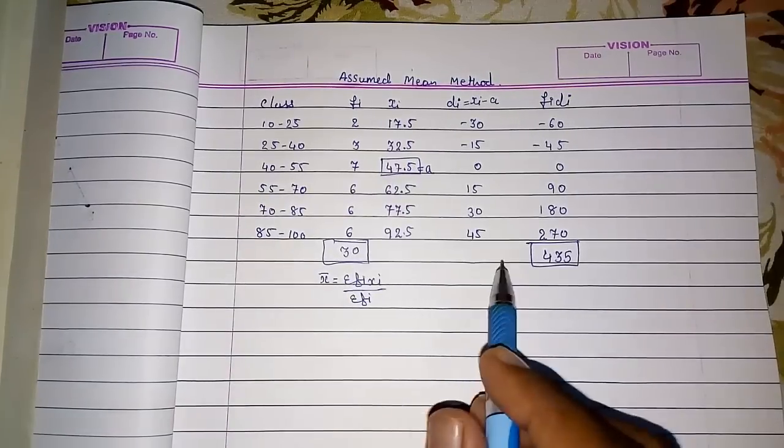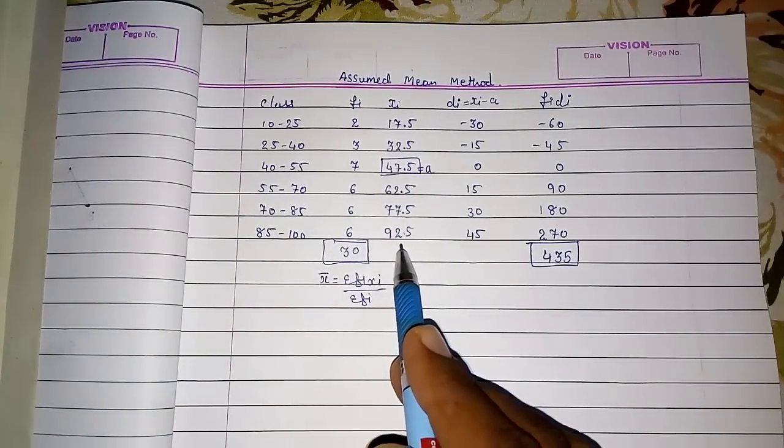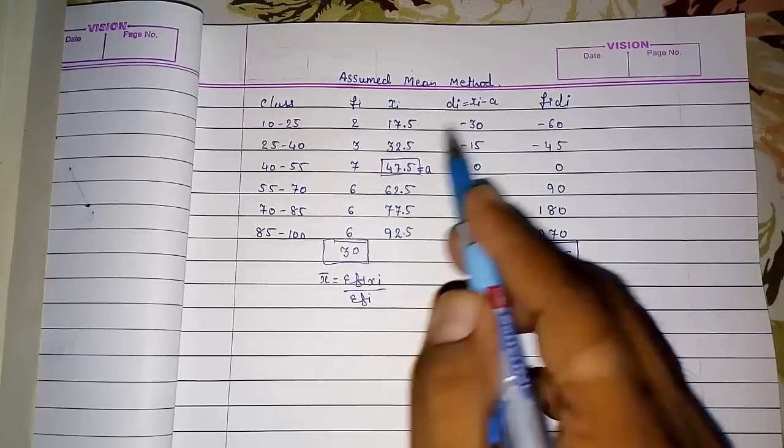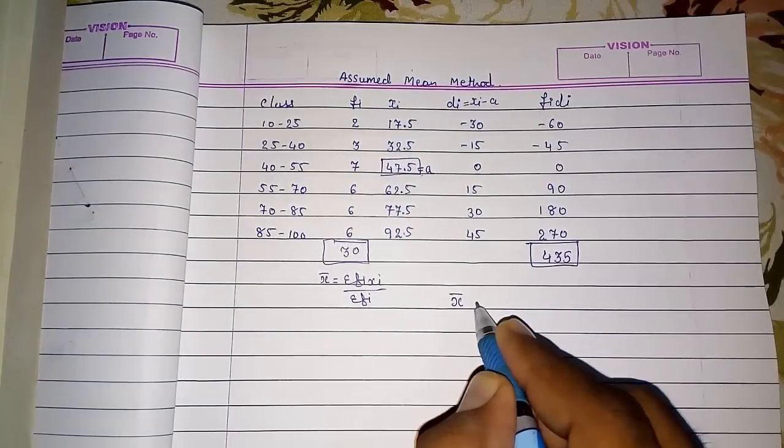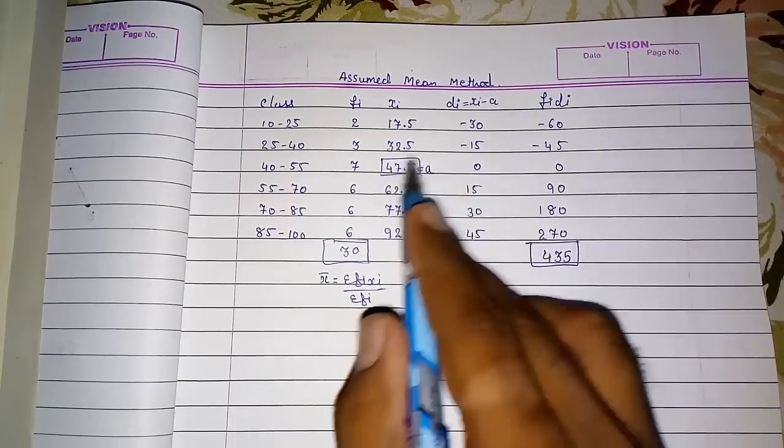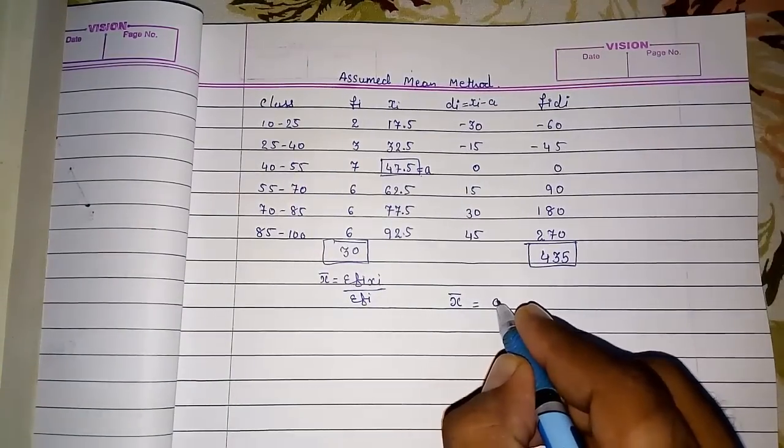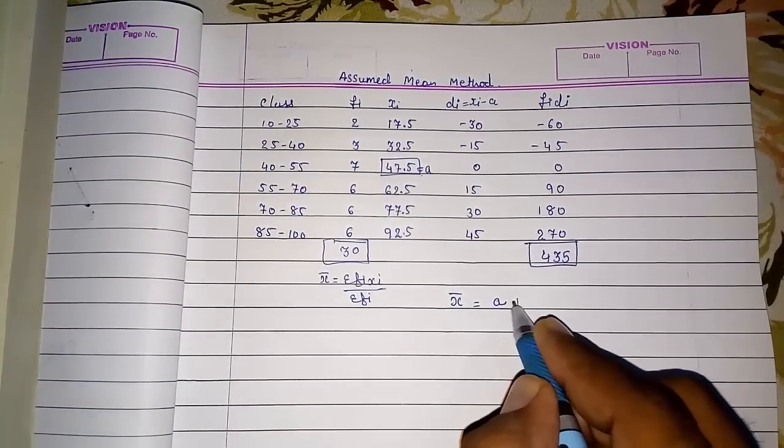So now what we had done? We had made these numbers smaller. So what we had done? We had subtracted a from all this. Subtracted a from all this. So now we are going to add a in our equation. We had subtracted a from all these numbers, so directly we are adding a in this number.